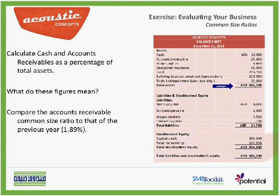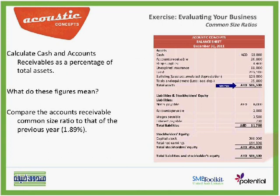The figure by itself is not meaningful unless we compare it to our planned ratio or to other companies in the same industry. As for the second ratio, receivables to total assets — if we look at the accounts receivables on the balance sheet, this is 26,000 dirhams. As a common size ratio, we take 26,000 over total assets of 506,500, which is 5.13%. It means that 5.13% of Acoustic Concepts' assets are in accounts receivables.